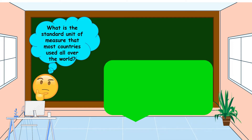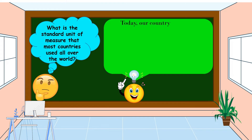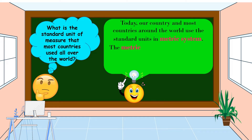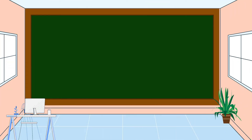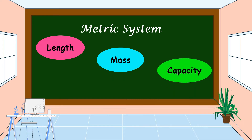What is the standard unit of measure that most countries use all over the world today? Our country and most countries around the world use the standard units in the metric system. The metric system is base 10, which is why each unit is either 10 times larger or 10 times smaller than the unit next to it. In the metric system, we have different units used to measure length, mass, and capacity.